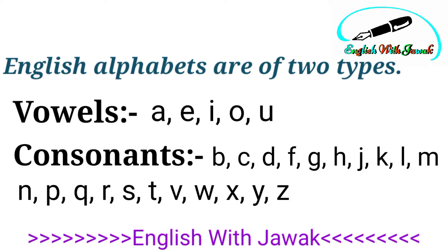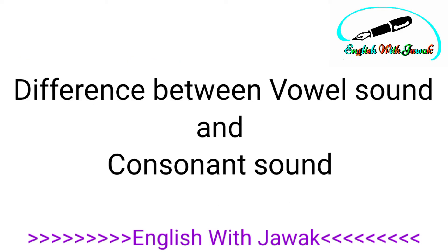پہلی قسم vowels کہلاتی ہیں جو کہ پانچ حروف ہیں: A، E، I، O، U۔ اور دوسری قسم consonants کہلاتی ہیں، یعنی بقیہ سارے الفیبیٹس — vowels کو چھوڑ کر جتنے الفیبیٹس بچ جاتے ہیں وہ consonants کہلاتے ہیں۔ اب ہم vowel sound اور consonant sound میں فرق سمجھتے ہیں۔